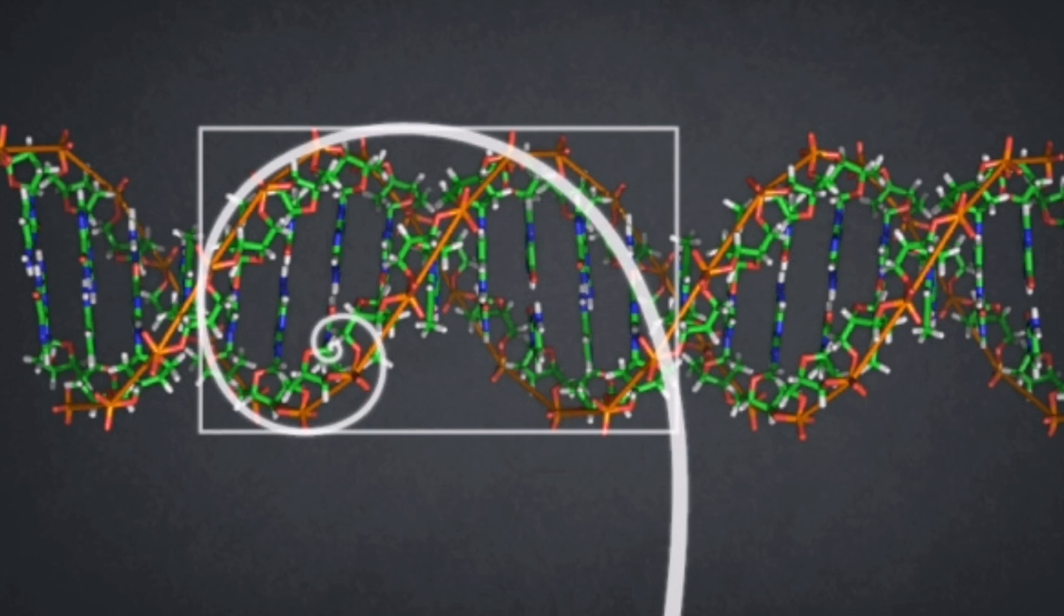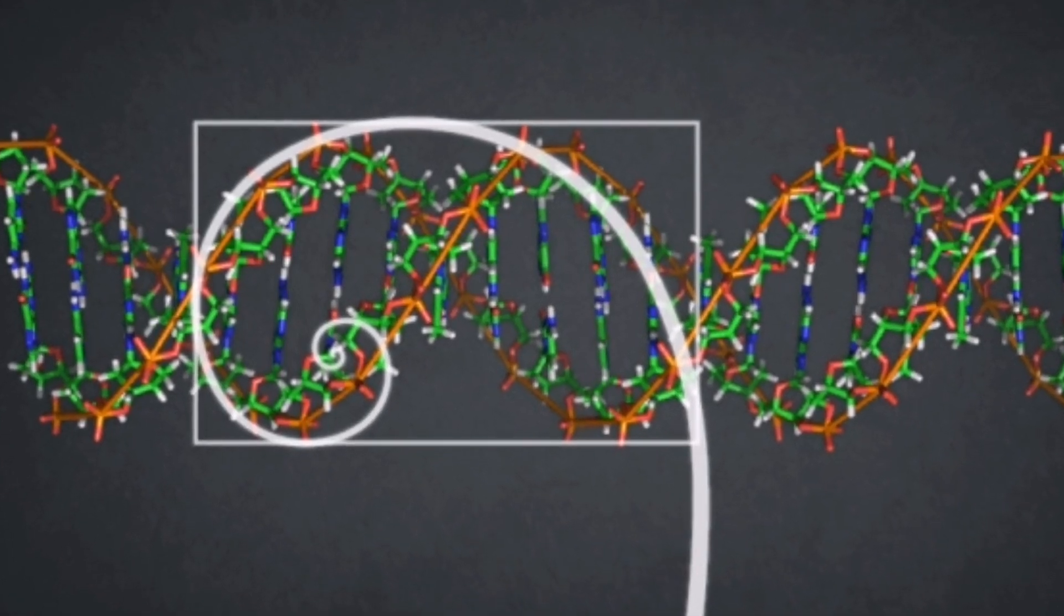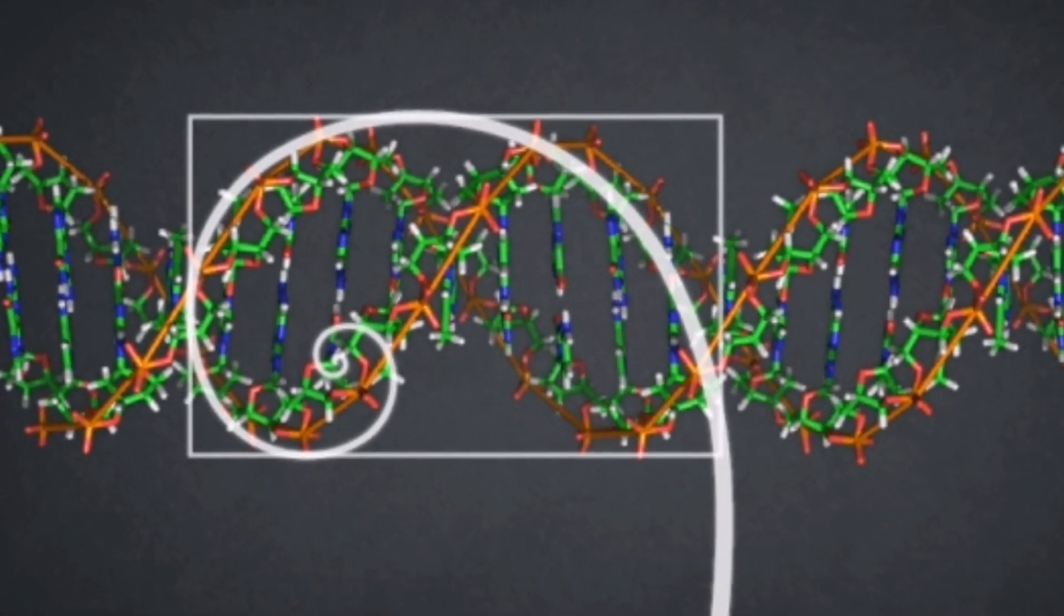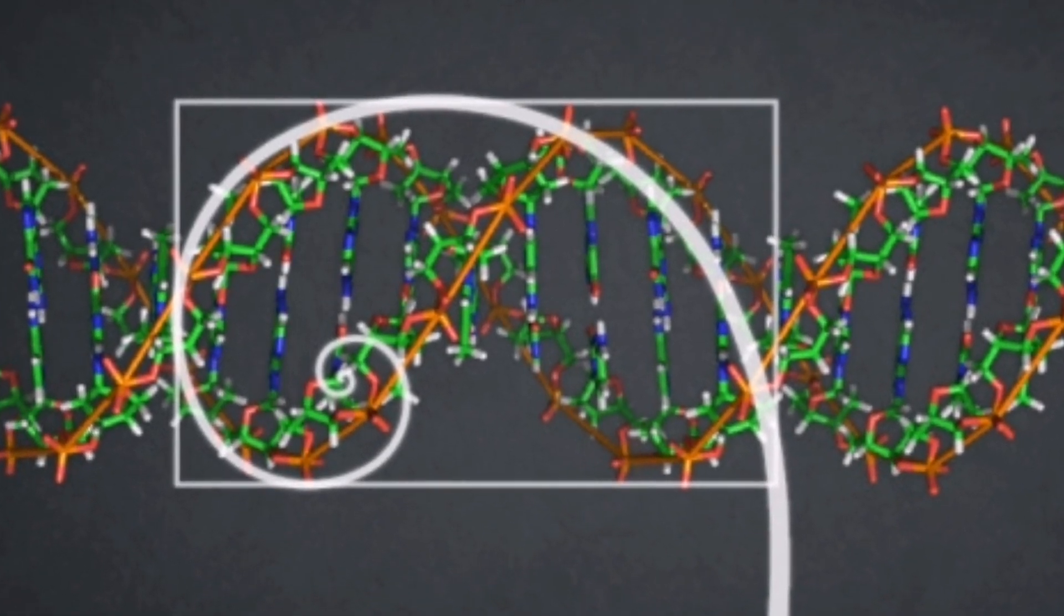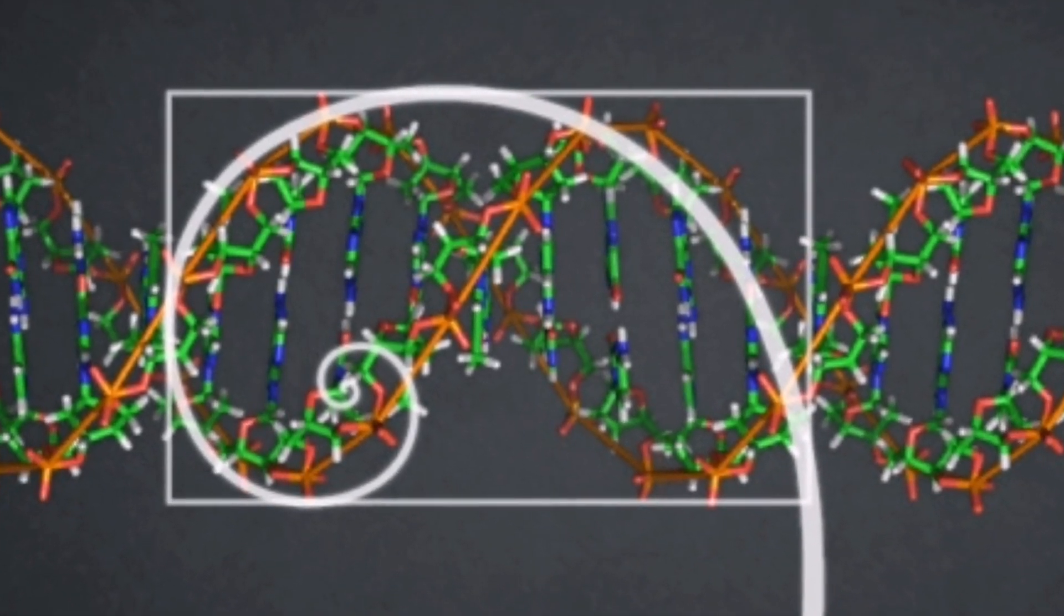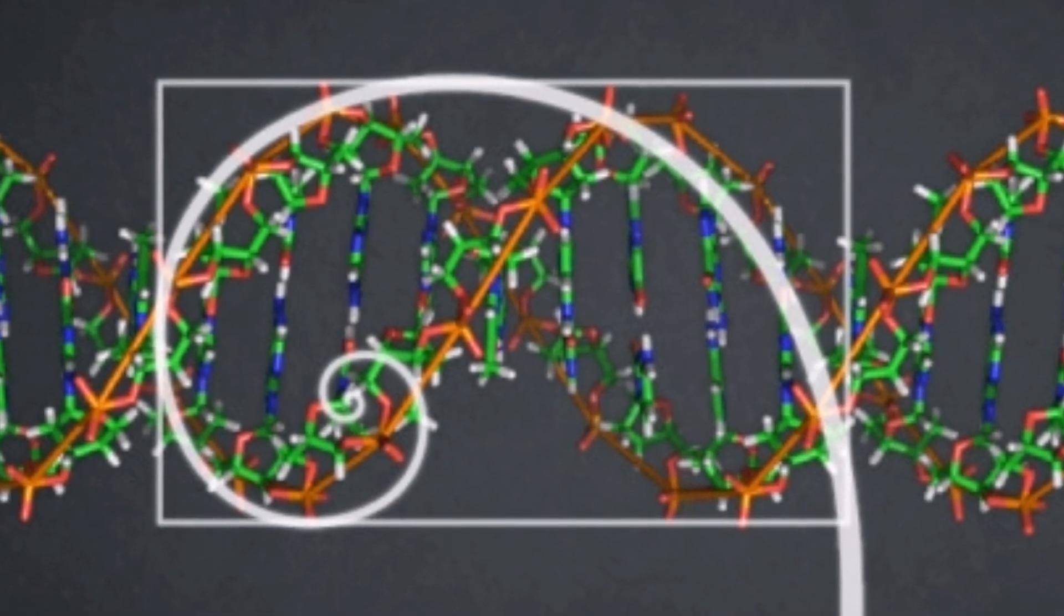The human DNA molecule also contains Fibonacci numbers, being 34 Angstroms long and by 21 Angstroms wide for each full cycle of the double helix spiral.